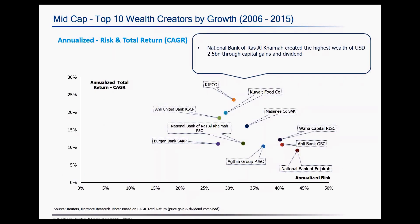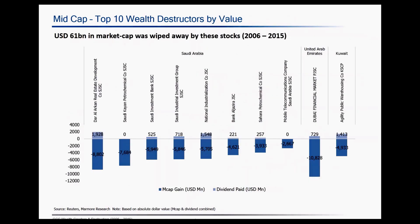This is the risk-return profile of the top wealth creators for the mid-cap segment in terms of total return. Moving to the top wealth destructors in terms of value for the mid-cap section: most of the companies are from Saudi Arabia. Most have not been able to recover from the 2006 stock market crash, and some banks were also impacted by the 2008 financial crisis. In terms of the most wealth destroyed, UAE-based Dubai Financial Market has destroyed the most wealth among the top 10 wealth destructors in terms of value, with most of this wealth destruction coming during the 2008 financial crisis.